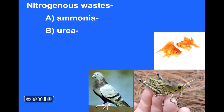Other organisms such as ourselves convert ammonia to urea. Urea is still fairly soluble in water and not quite as toxic as ammonia, so we can produce urea within our urine and store it in our bladders. Other animals, for example insects and birds, convert ammonia to a highly concentrated form that is not very soluble in water — namely uric acid.